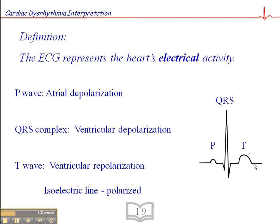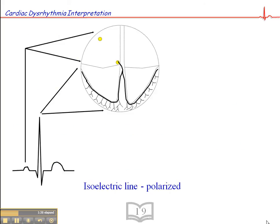And then the flat line that is between the complexes is referred to as the isoelectric line or the polarized state. This is the time when the number of negative charges inside the cell is equal to the number of positive charges outside the cell. So that's a resting cell.